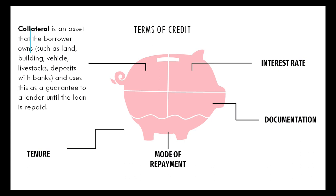When you go to a bank for a loan, the bank will ask for collateral — an asset that the borrower owns and uses as a guarantee to the lender until the loan is repaid. You will discuss interest rate, documentation, payment method, EMI, and loan tenure. Collateral can be land, building, vehicle, livestock, or deposits with banks.